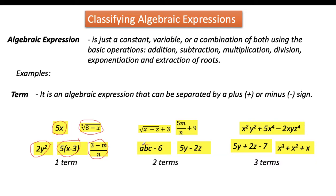So how about two terms? In abc minus 6, abc is one term and 6 is another term, separated by minus — therefore it has two terms. Similarly, in 5y minus 2z, 5y is the first term and 2z is the second term. The expression square root of x minus z plus 3 also has two terms. And 5m over n plus 9 has two terms as well: 5m over n is one term, and 9 is another.